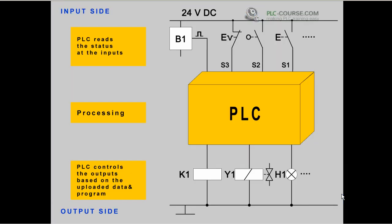Now we will take a look at the way a PLC works. PLC works in programming cycles. It means that it first reads the status at the inputs, then goes to processing, and then based on the program that is in its internal memory and based on the data that it has uploaded at the beginning of the cycle, it controls the outputs and executes any commands.